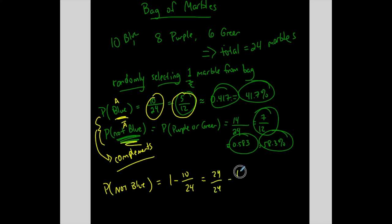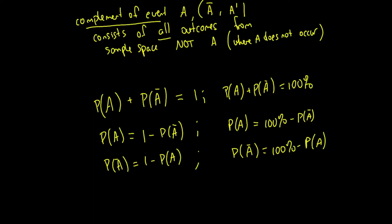Subtracting fractions, you need a common denominator. So I need to convert this into a fraction with the denominator of 24, which is 24 over 24. And you'll see 24 minus 10 on top is 14 over 24. That matches what we got here. Same thing. You're doing the same idea.